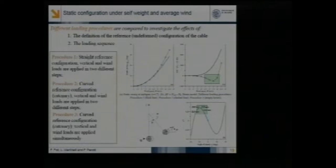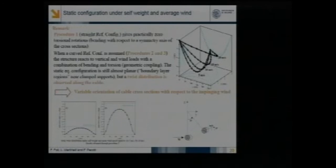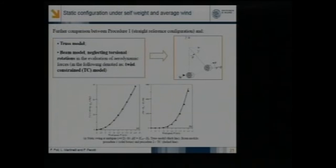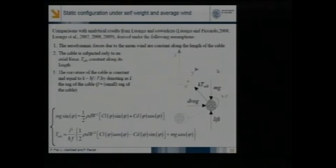Here you can see that we have a region in which we have a significant lift effect, which is related to this region of the lift curve, which is not predicted by the first procedure. We compared the response with respect to truss and cable models, and we found out that we have exactly the same results if we neglect the torsional rotation of the cross-section in the evaluation of aerodynamic loads.